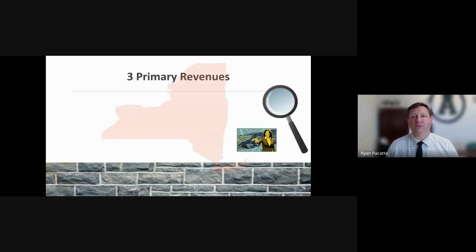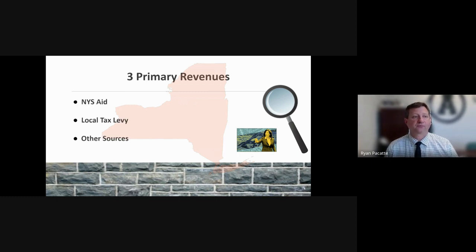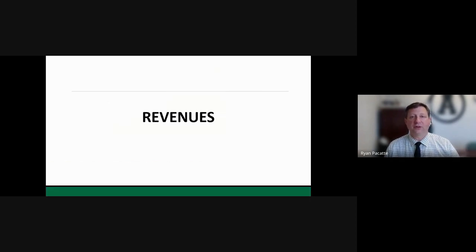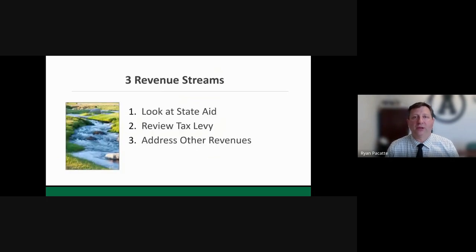Every district in New York state really uses two primary revenue streams, but there are three that most schools access annually. This presentation has a New York state-specific perspective along with some history and background. The three primary buckets are: New York state school aid, monies generated through the local tax levy, and a couple of other minor sources of revenue. We're going to focus exclusively on the revenue side — where does the money come from? In the budget hearing, we'll address more about the expenditures.